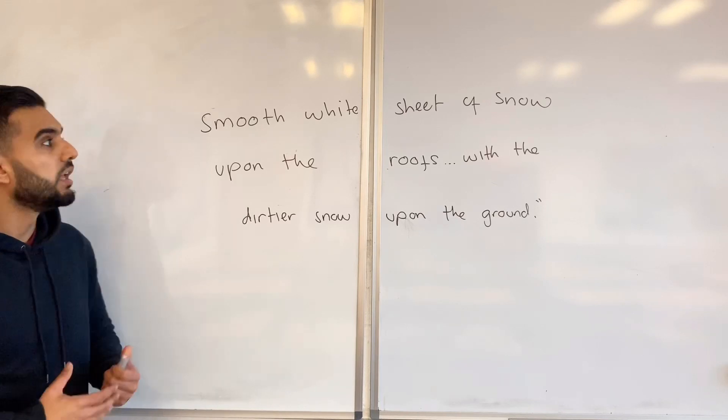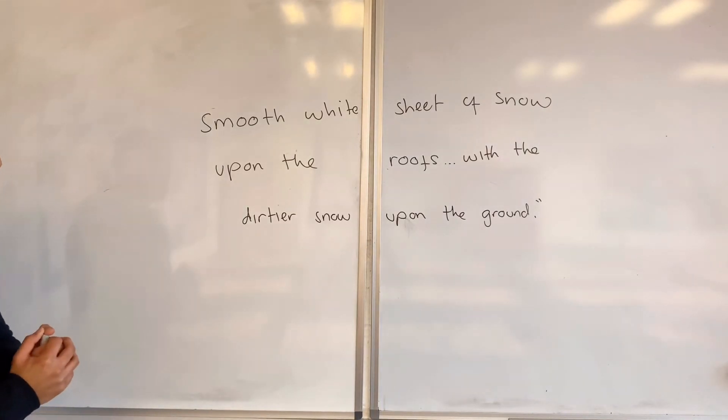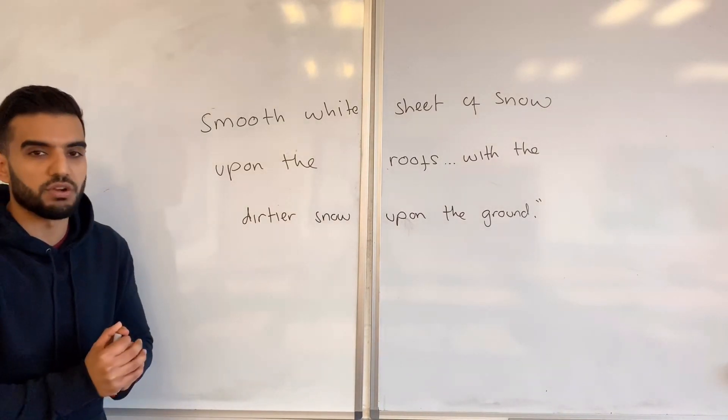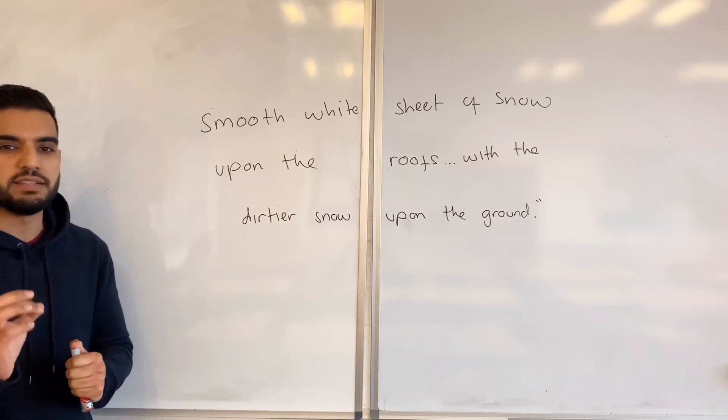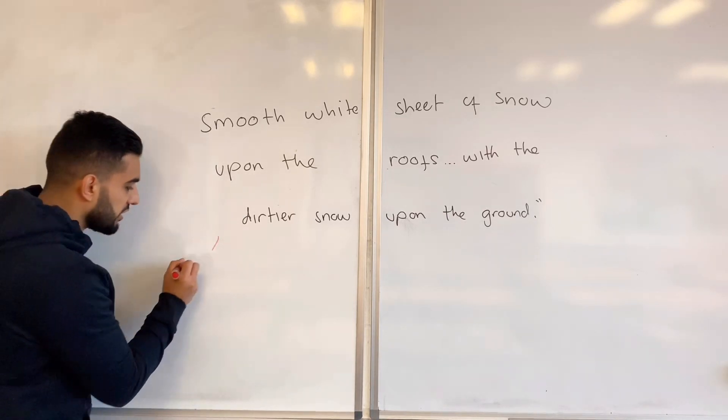This is a quote from A Christmas Carol: 'Smooth white sheet of snow upon the roofs with the dirtiest snow upon the ground.' Now let's do a very good analysis of this quote. This quote represents the class divide.